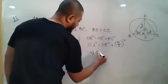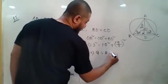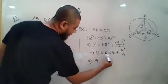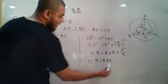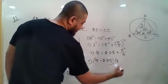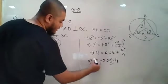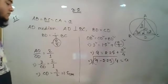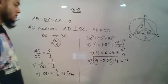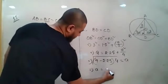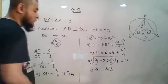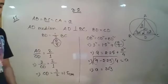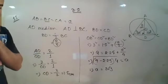Continuing the calculation: 9 − 2.25 = a²/4, so a² = 4 × 6.75 = 27. Taking the square root gives a = 3√3. So the length of each side of the equilateral triangle is 3√3 centimeters.